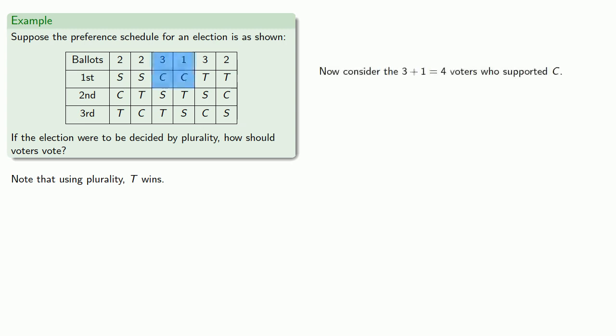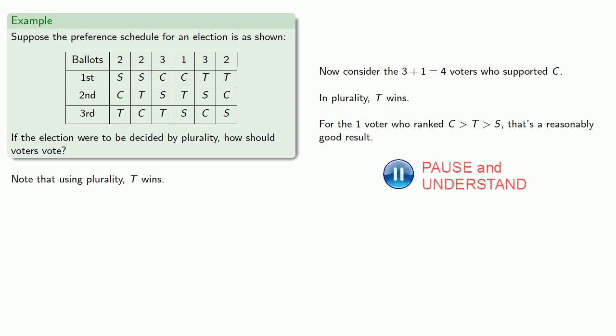Now consider the 3 plus 1, the 4 voters who supported C. Again, in plurality, T wins, and so the question is, if they could have voted differently, would they have done so? And that depends. So let's consider this one voter who ranked C over T over S. Now, while their favorite candidate, C, didn't win, their second favorite, T, did actually win. And so T winning, well, that's a reasonably good result for them. So while their first choice didn't win, their second place did, and their least favorite lost. And so they probably don't want to change their vote.